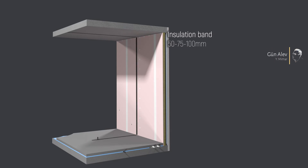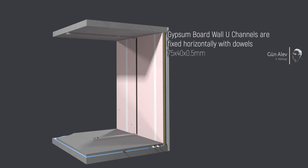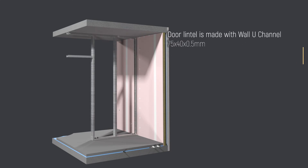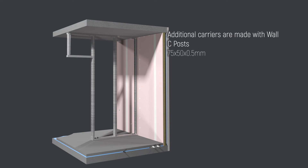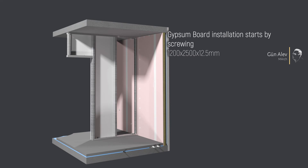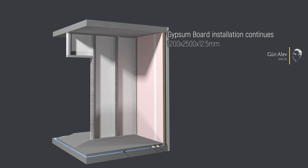Insulation band is applied. Wall U channels are fixed. Wall C studs are screwed and a door lintel is made with wall U channel. Additional carriers are made with wall C posts and gypsum board installation is started and continued.